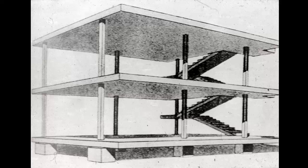This project, like many of Corbusier's projects, is based on the Domino House technology — a play on the words for house (domus) and the domino stacking of horizontal concrete plates, actually hollow clay tile, stacked on columns. Once you have this basic configuration using the five points, you can create free plans, free facades, roof terraces, and so on.